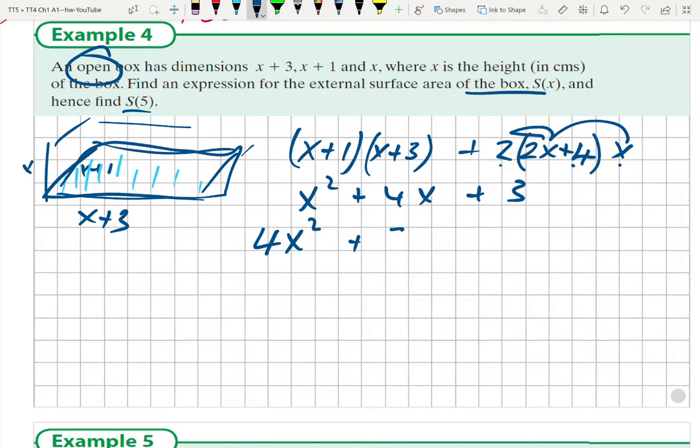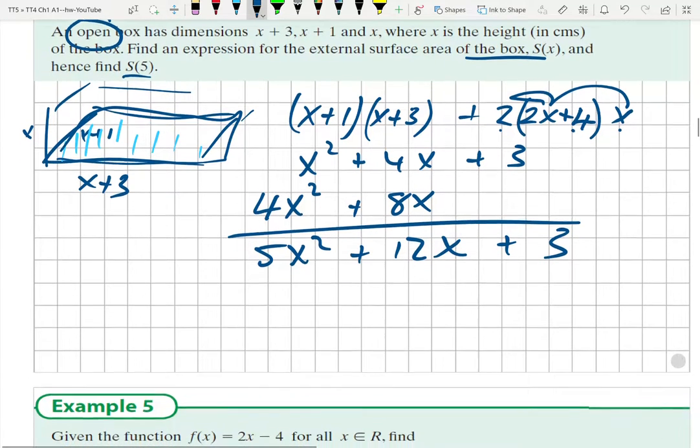We have 5x squared plus 12x plus 3. Find an expression for the external surface area, done. So S(x) equals 5x squared plus 12x plus 3.